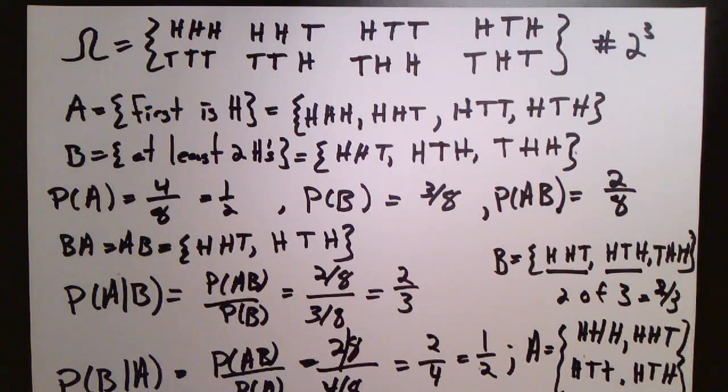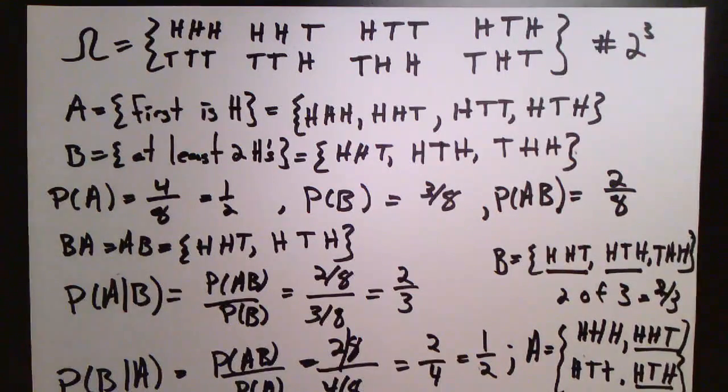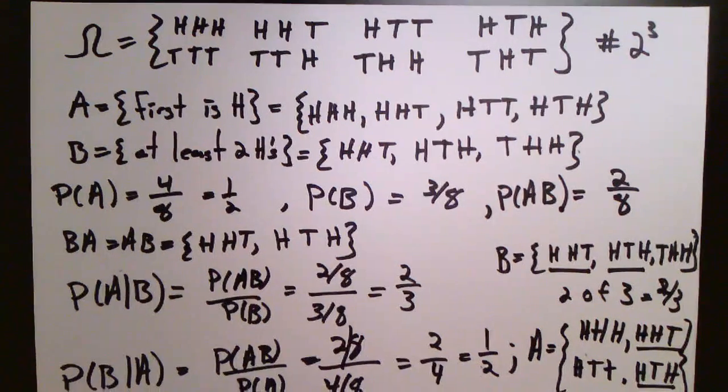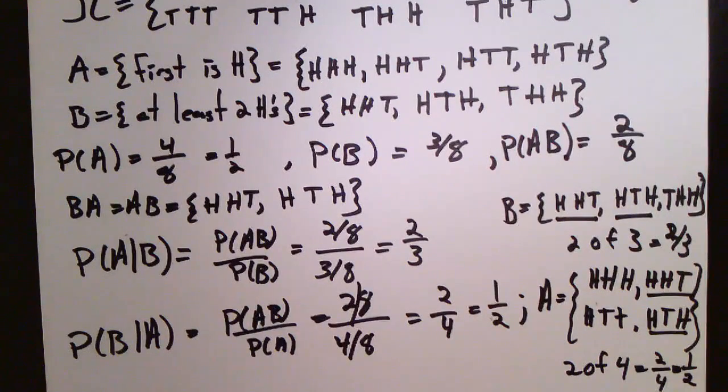Well, there are two of them. The ones that I've just underlined. That one and that one. Because that's the ones that have both two heads and have a heads first. Which is the probability of B given that we already know that we're in the set where there's a head first.